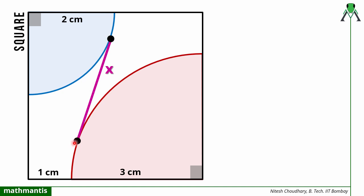What is this x? This is the line which is tangent to both the quadrant circles. So we have to find the length of the common tangent to these two quadrant circles. This is our question.